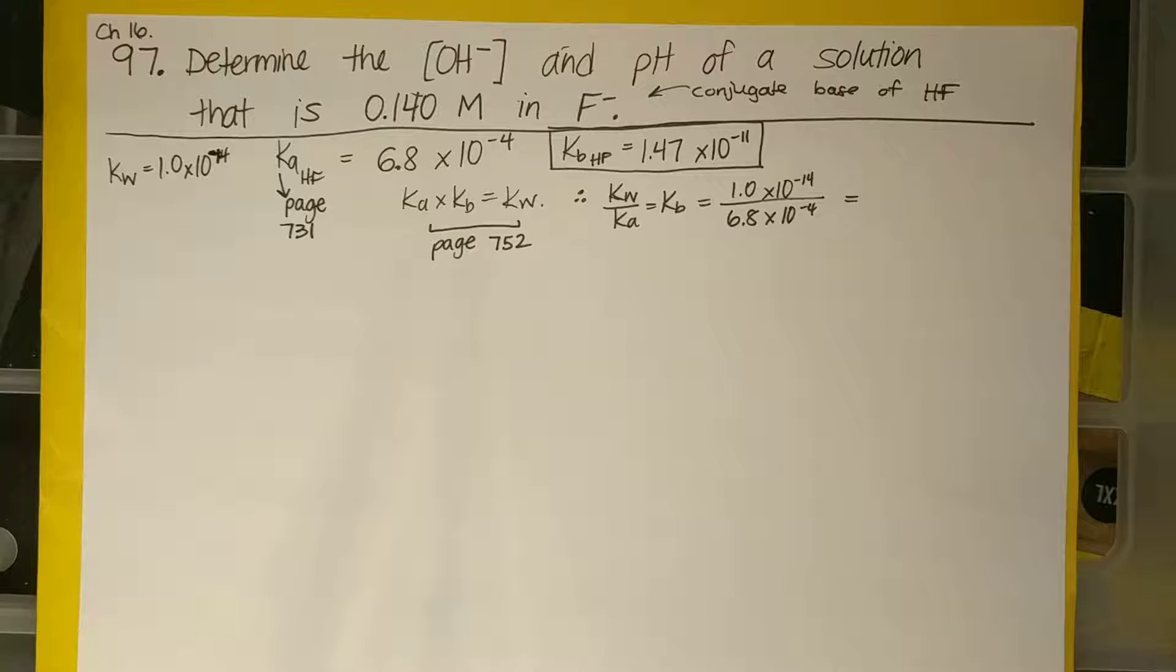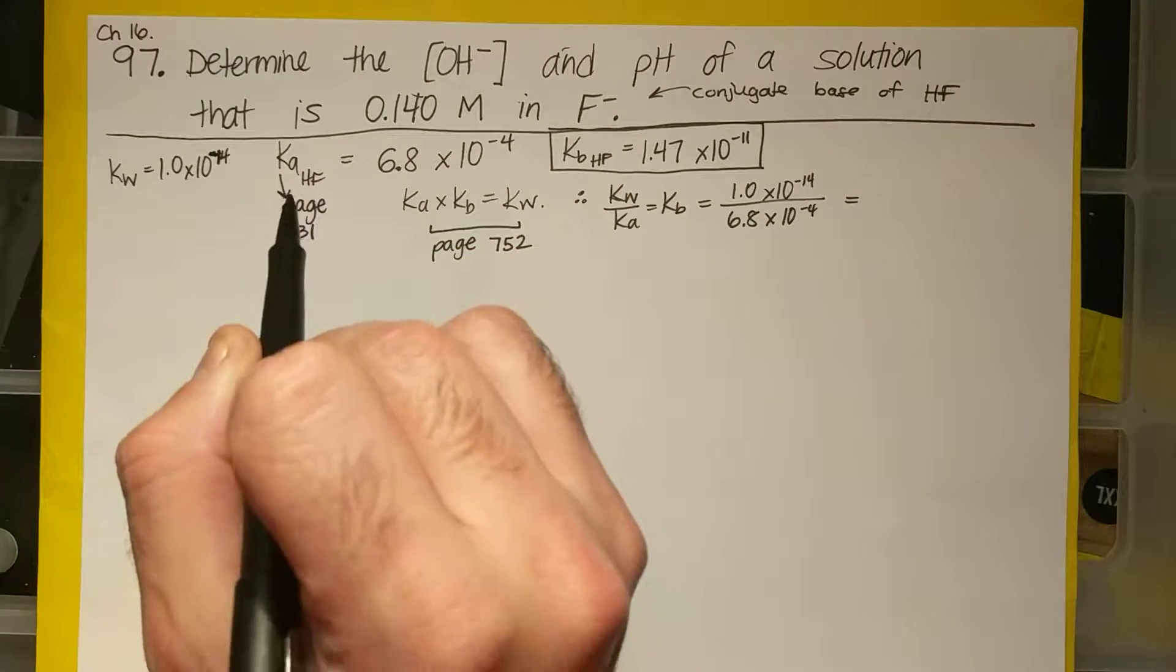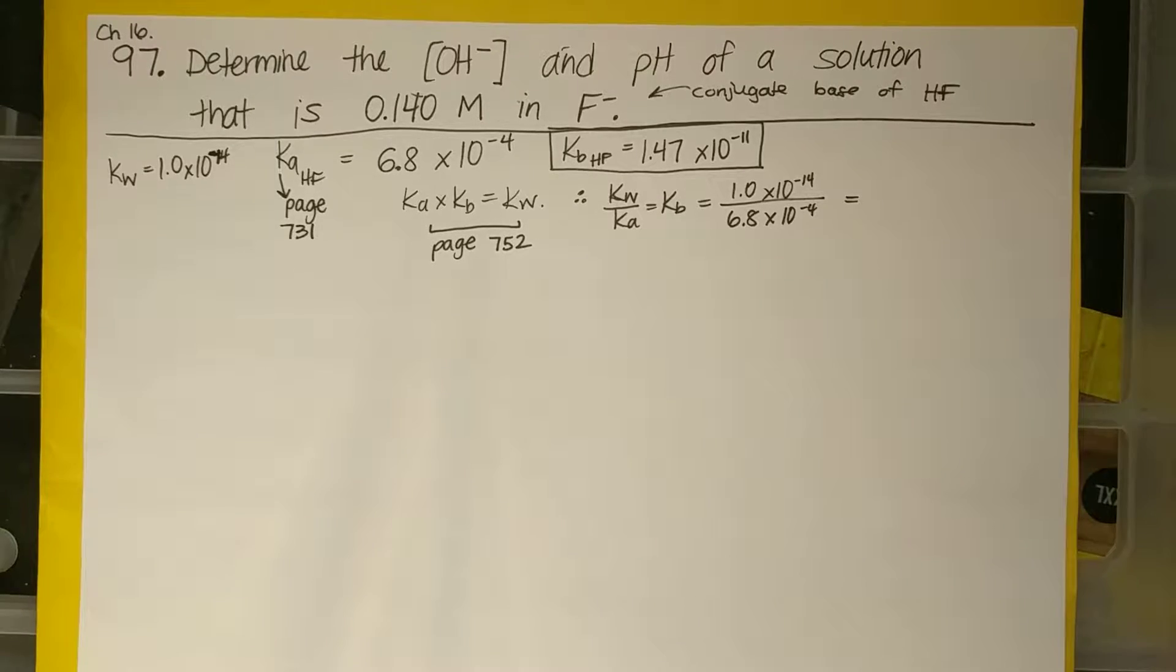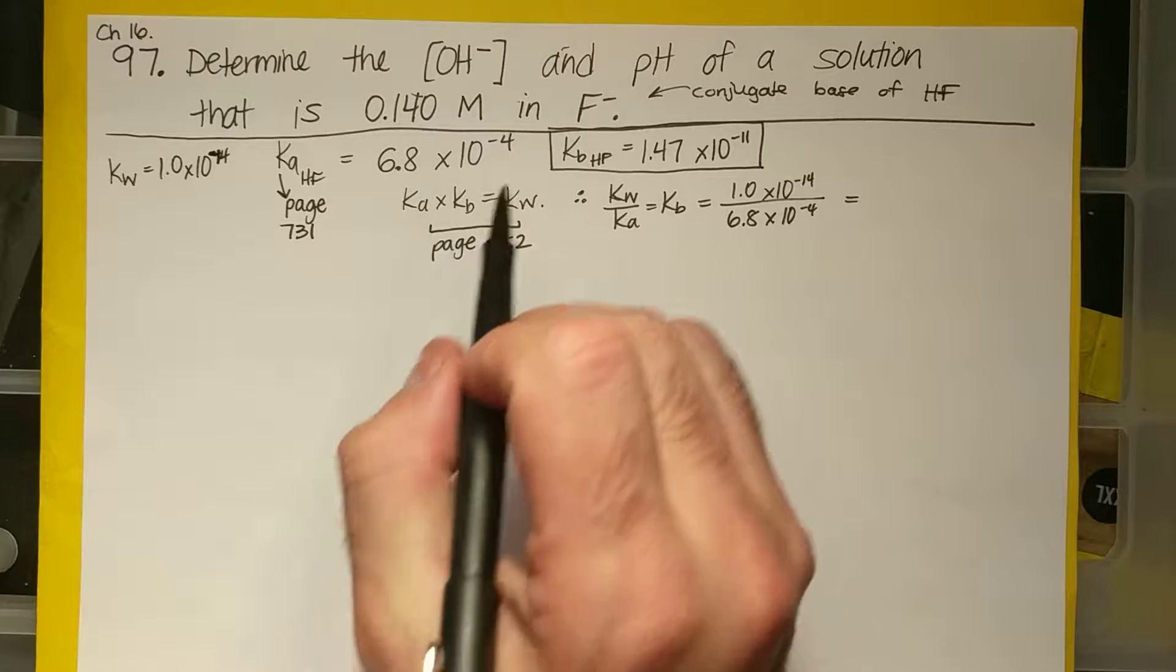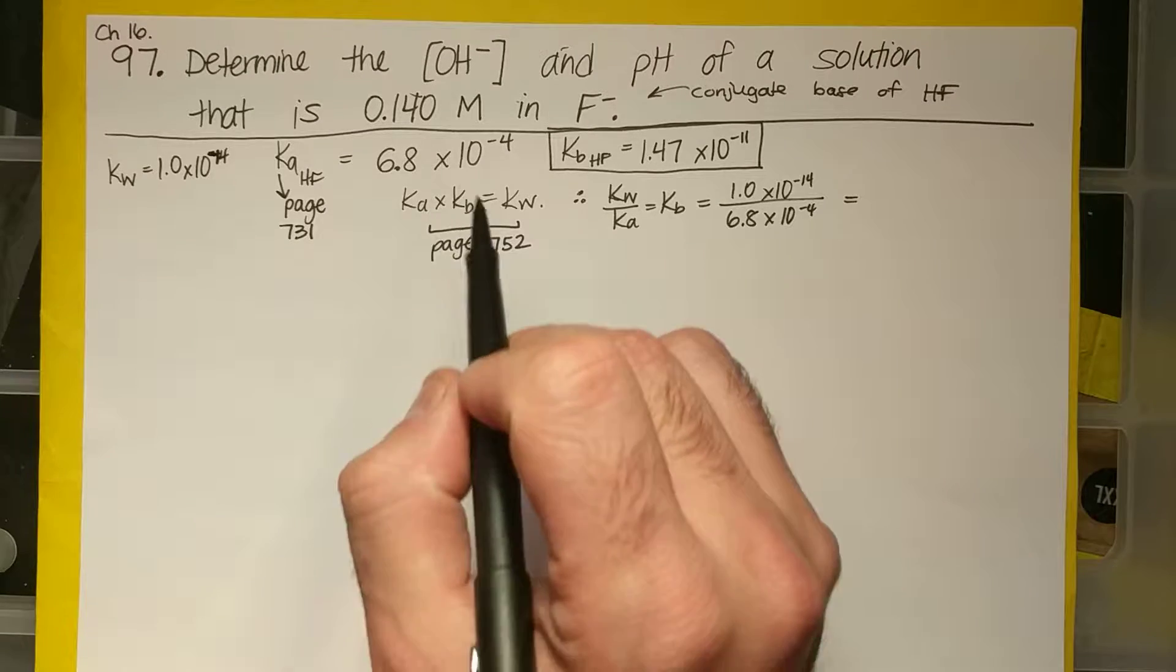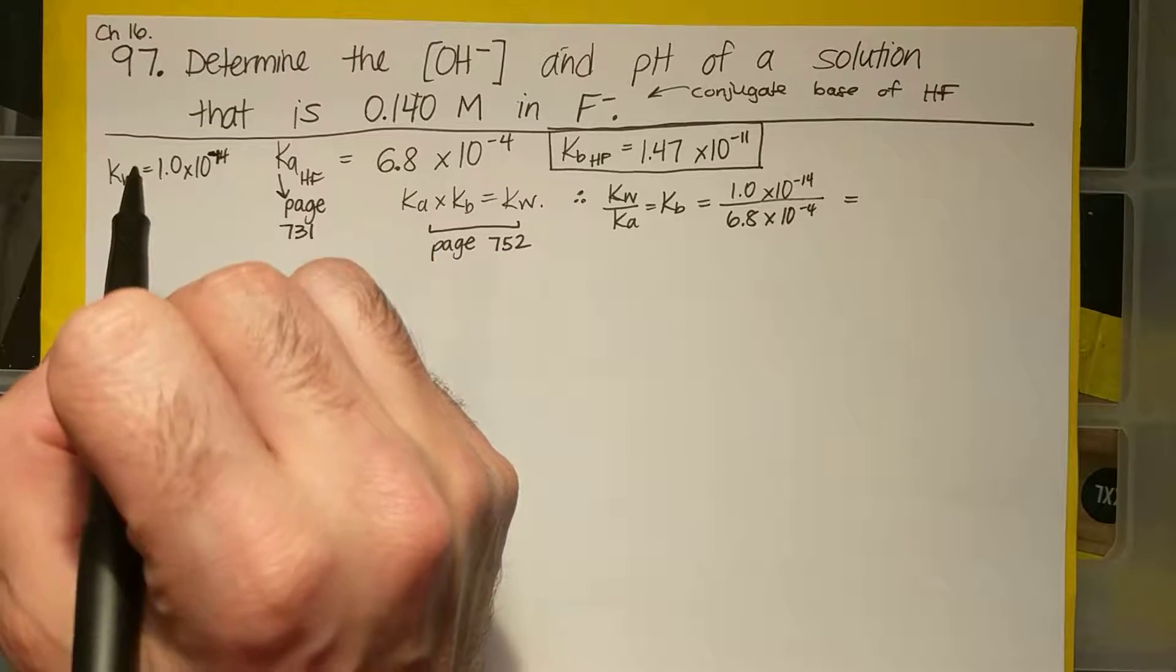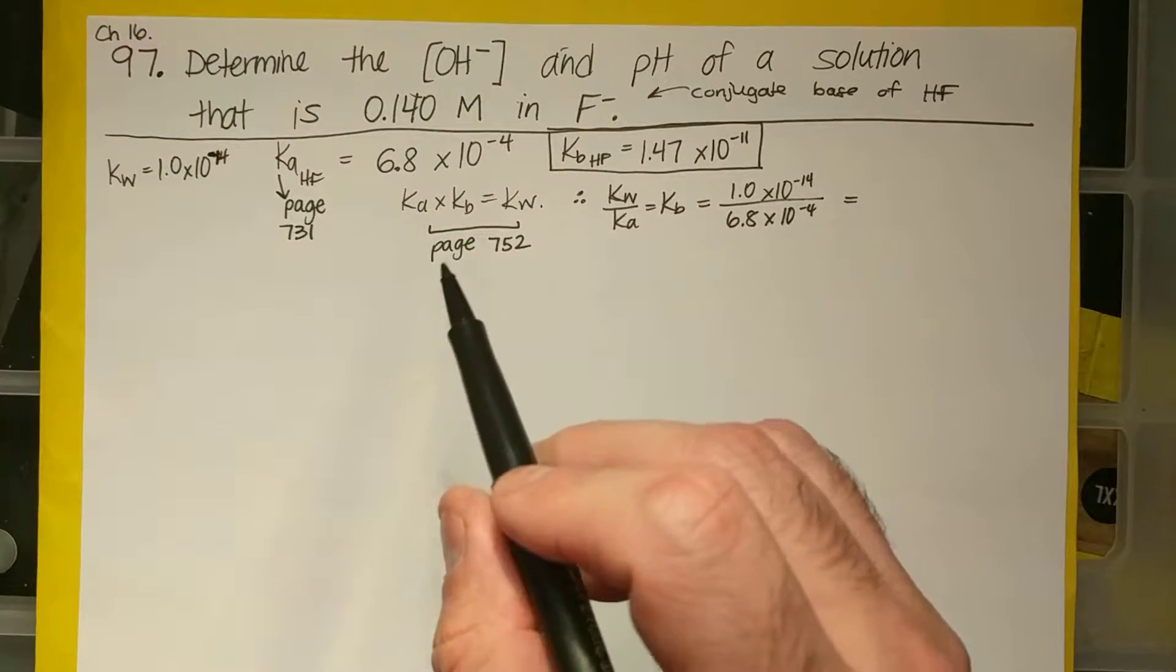So off the bat now, if I have a weak acid or even a weak base, I'm going to have to use an ICE table somewhere to figure out my concentrations. So in your textbook on page 731, they give us the KA of HF, and it's 6.8 times 10 to the minus 4th. And on page 752, which is part of chapter 16 outline, there's this expression that says KA times KB equals KW, and KW is 1.0 times 10 to the minus 14th.